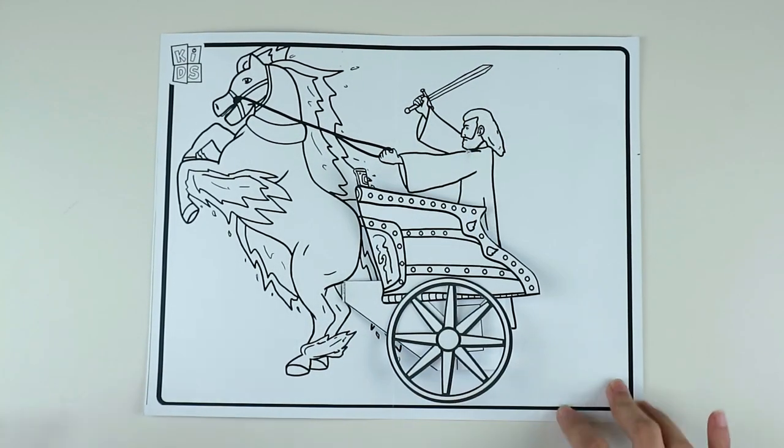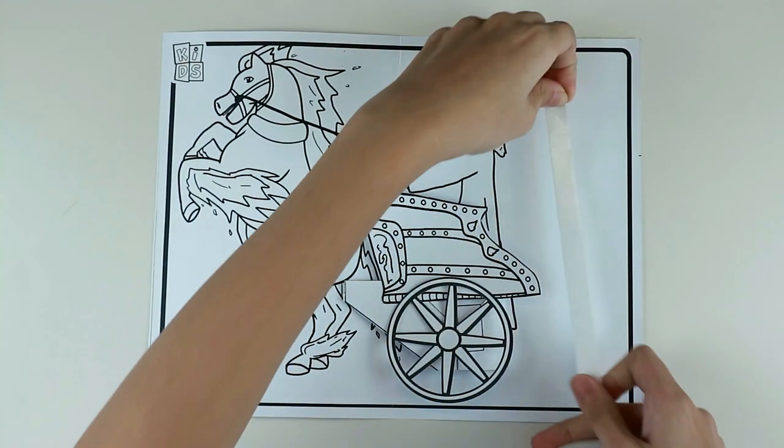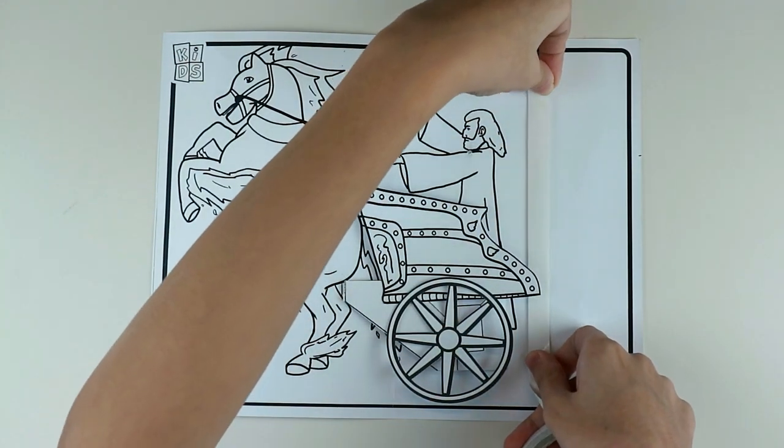Lastly, attach a strip of double-sided tape as long as the chariot. The kids will stick the tissue paper here to create the fire effect.